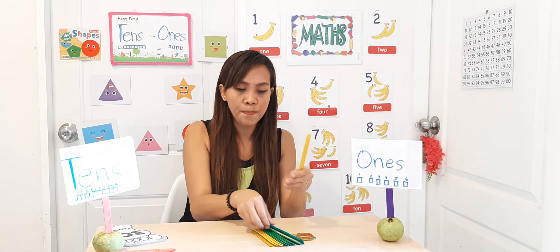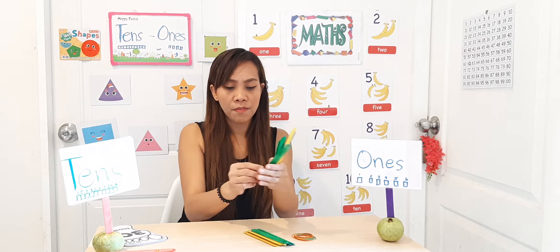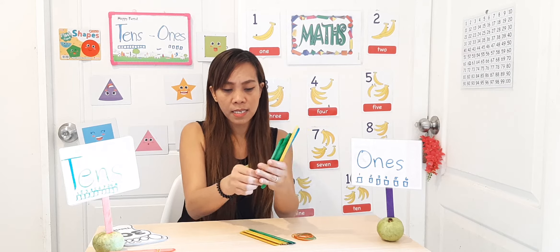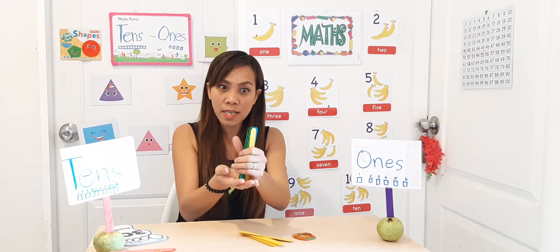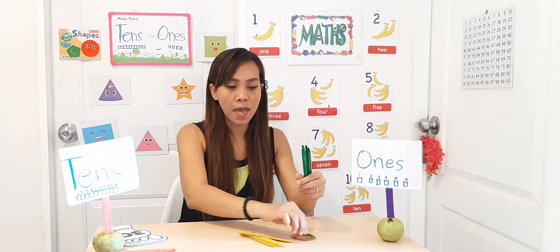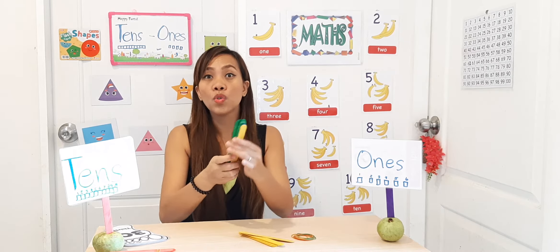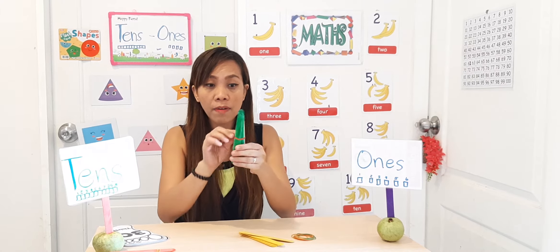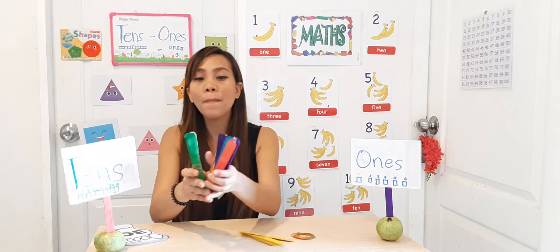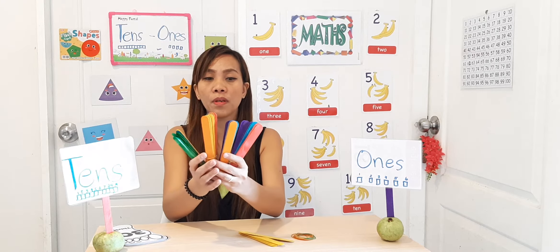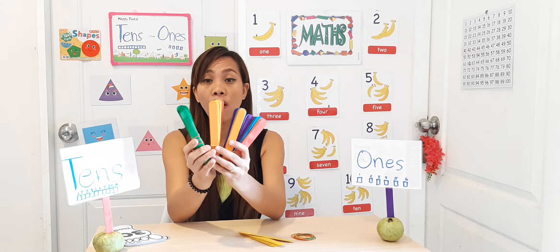Keep counting: 1, 2, 3, 4, 5, 6, 7, 8, 9, 10 — we still have ten. Good job. Tie it again. Now I have another set of ten. Let's put it here. So how many tens do I have now? One ten, two tens, three tens, and four tens.